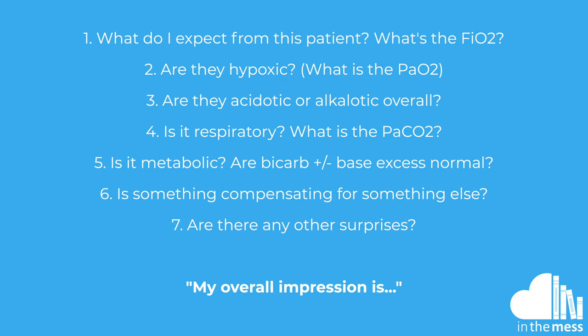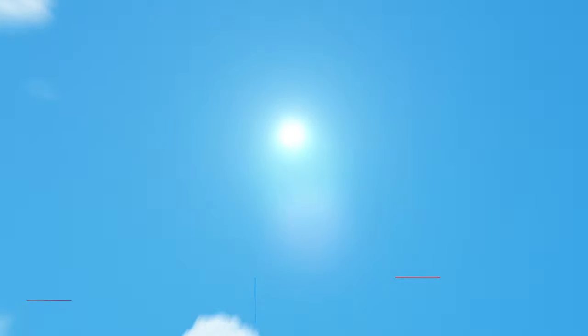This is a lot — we know it's a lot, and it essentially takes practice. Look at all the ABGs you can and try to interpret them. There's more to this: anion gaps in metabolic acidosis is not something we've covered here — that's definitely the next level. Take your time to fully understand this and then come back to things like anion gaps in due course. I hope this was useful for you — please like, subscribe, and share this video with your friends and colleagues.